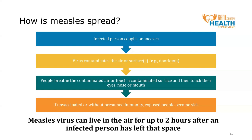Now let's discuss how measles is commonly transmitted or spread in the community. When an infected person coughs or sneezes, respiratory droplets containing the virus infect the surrounding air and land on surfaces. If non-immune individuals breathe contaminated air or touch a contaminated surface and then touch their eyes, nose, or mouth, they can become infected with measles. Measles virus can live in the air for up to two hours after an infected person has left that space. So an exposed person might enter a contaminated room long after the infected person has left, but they can still become sick if they are unvaccinated or otherwise not immune.